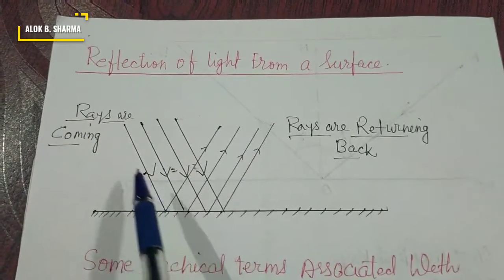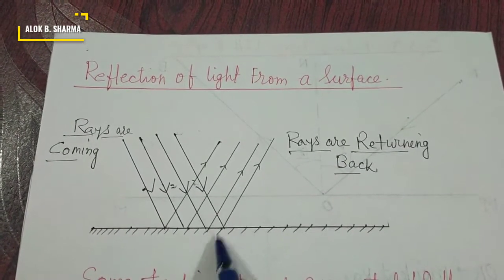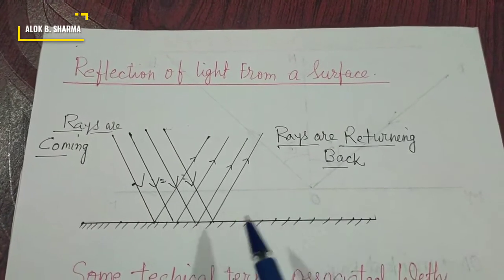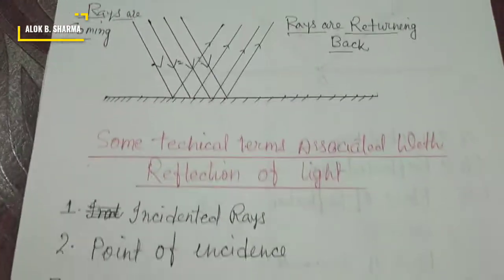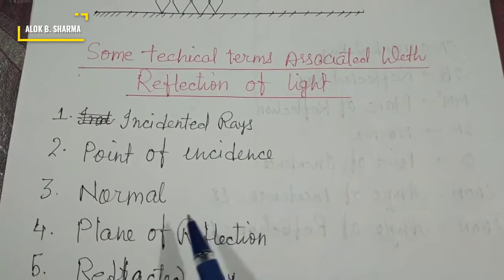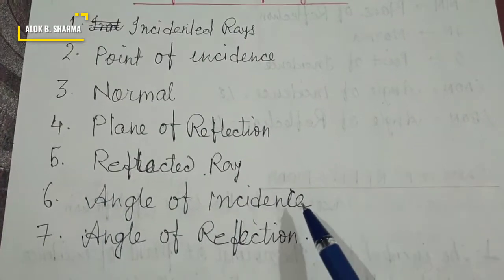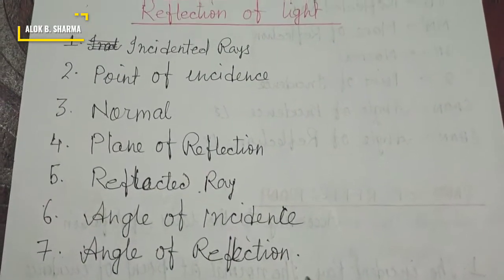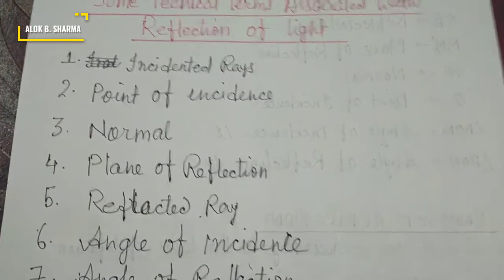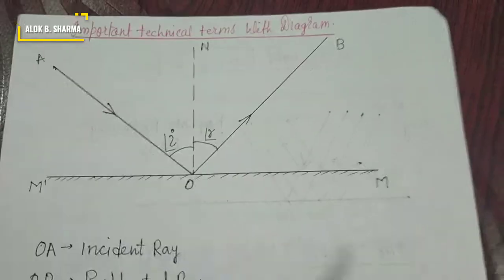So, light rays come from somewhere, fall on the smooth surface, and return back. There are some important technical terms related to reflection of light: incident ray, point of incidence, normal, plane of reflection, reflected ray, angle of incidence, and angle of reflection.